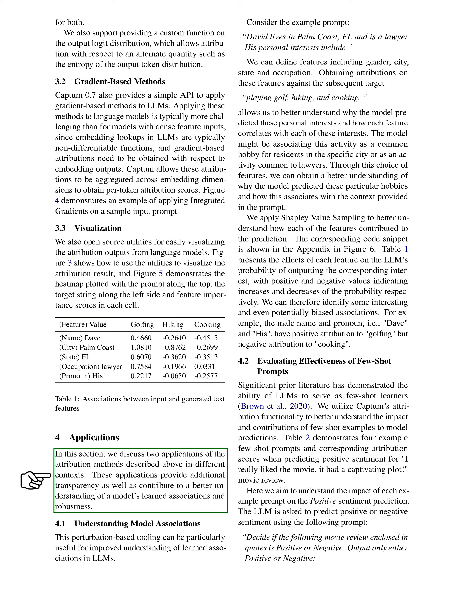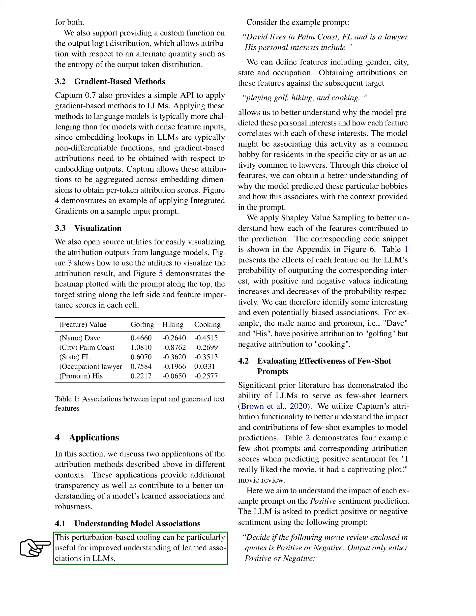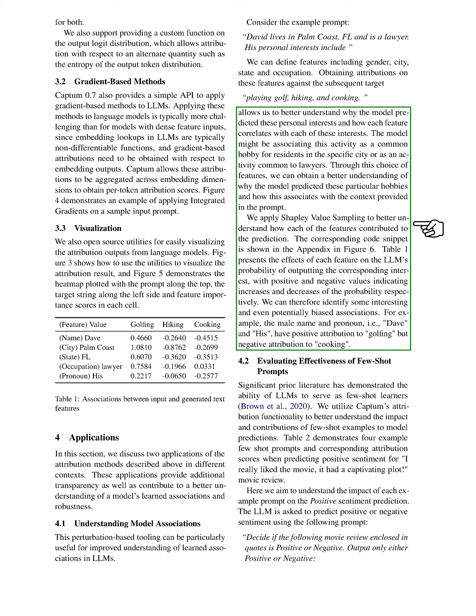We'll now discuss two applications of these attribution methods in different contexts, providing additional transparency and contributing to a better understanding of a model's learned associations and robustness. The first application is understanding model associations. This perturbation-based tooling can be useful for understanding learned associations in language models. For example, we can define features including gender, city, state, and occupation, and obtain attributions on these features against a target to understand why the model predicted certain personal interests and how each feature correlates with those interests. Applying Shapley value sampling allows us to identify interesting and even potentially biased associations.